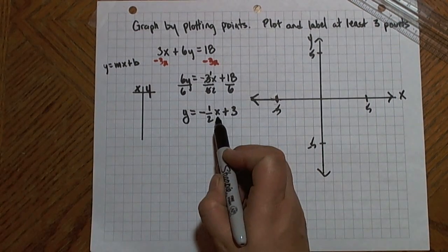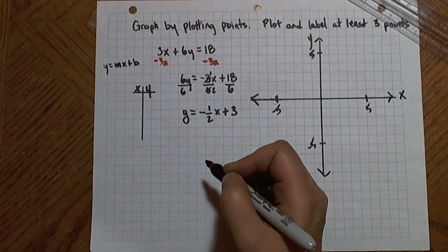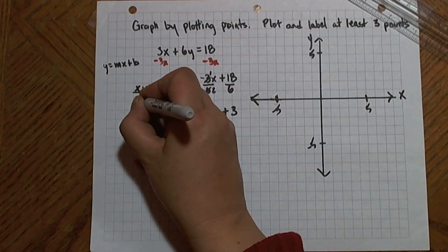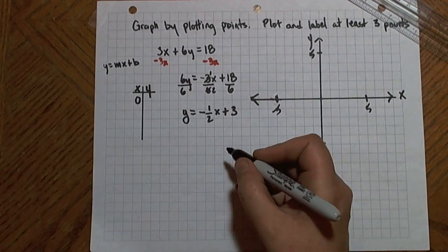So I get to choose any values I'd like to put in for x. I'm going to choose ones that I think are going to be fairly easy to work with. So one I'll choose is 0. I always choose 0 as one of my values.